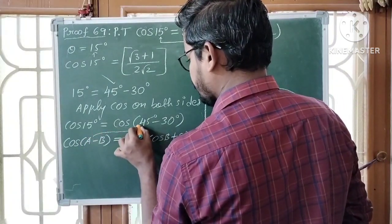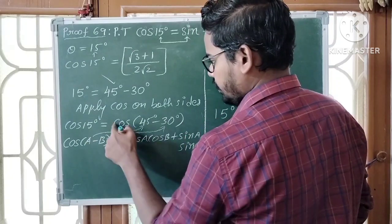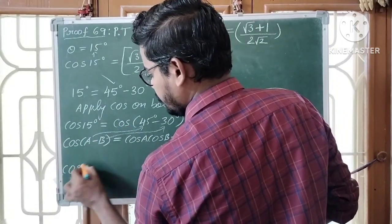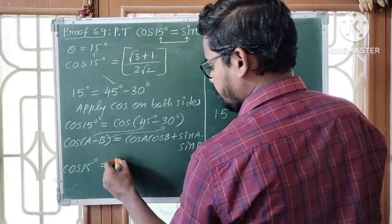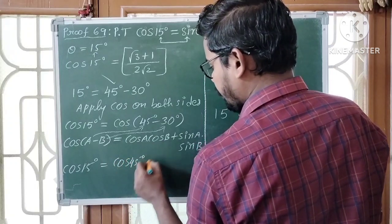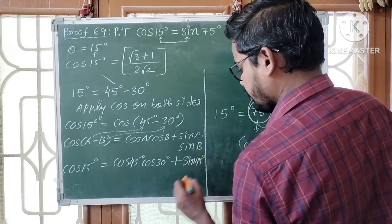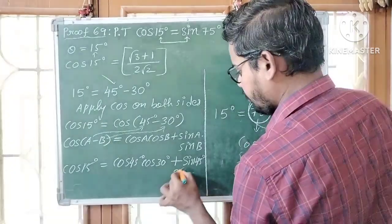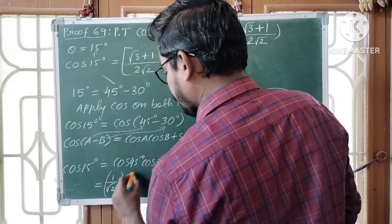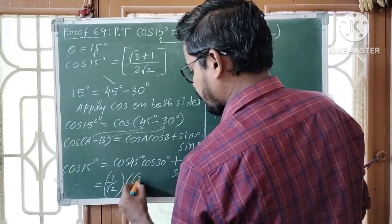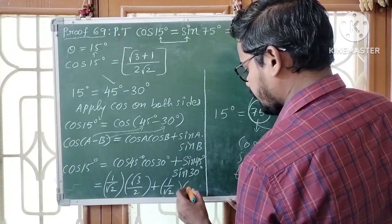Here A is equal to 45 degrees and B is equal to 30 degrees. Replace A by 45 and B by 30. Therefore, cos 15 degrees equals cos 45 degrees into cos 30 degrees plus sin 45 degrees into sin 30 degrees. Cos 45 is 1 by root 2, cos 30 is root 3 by 2, sin 45 is 1 by root 2, and sin 30 is 1 by 2.